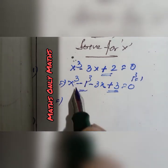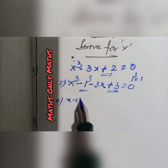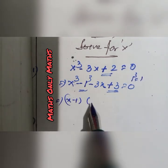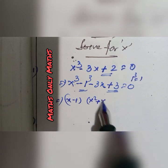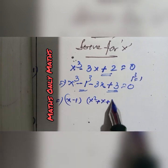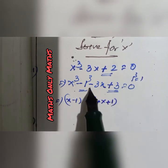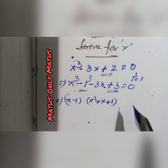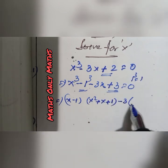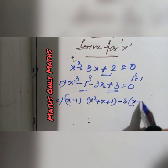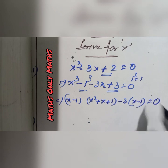Now, using the identity a cube minus b cube equals a minus b into a square plus ab plus b square. And from minus 3x plus 3, minus 3 is common, I get x minus 1 equals to 0.